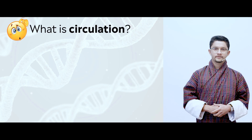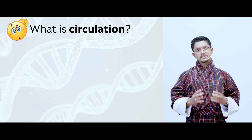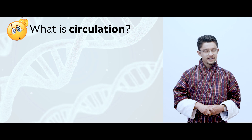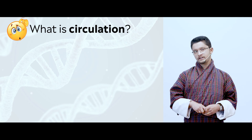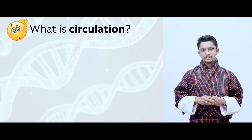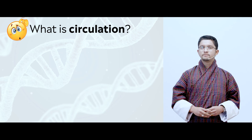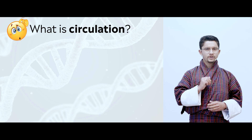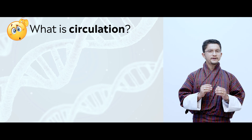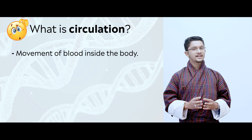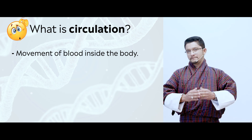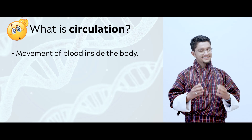Let us look at circulation. What is circulation? It is a process which involves a body and something moving inside the body. Circulation means if a substance inside a body moves again and again in the same path, then we call that circulation. A simple example is blood — blood moves around our body again and again following the same path. So we can say circulation of blood in our body.